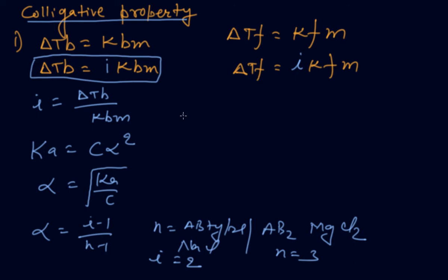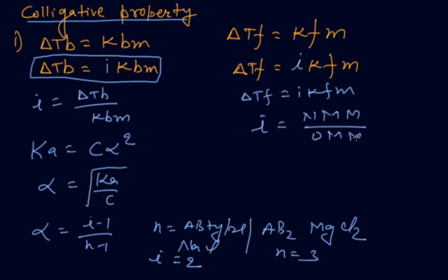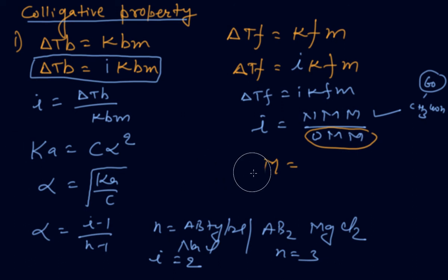Another formula: ΔTf = i·Kf·m, and i = normal molar mass / observed molar mass. If acetic acid has a normal molar mass of 60, you need to find the observed molar mass. Use the molality formula: molality = (given mass / molar mass) × (1 / kg of solvent), where the molar mass here is the observed molar mass.